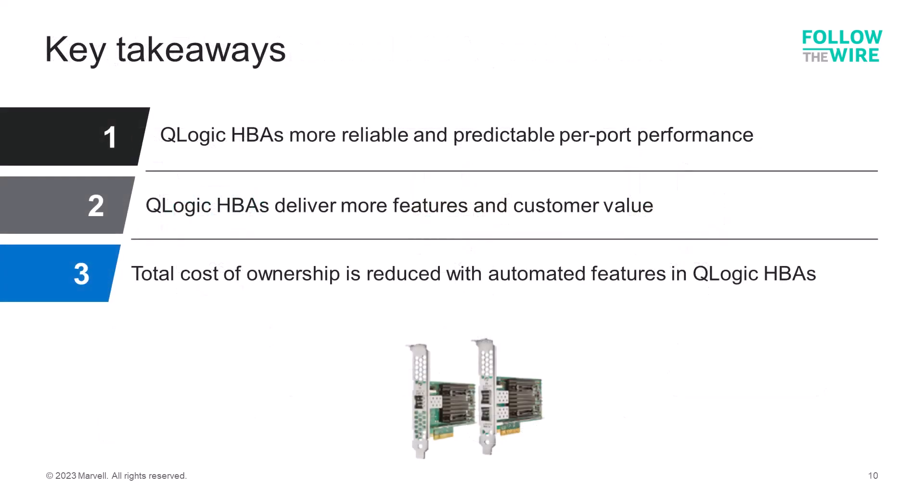Here are the key takeaways. QLogic HBAs with port isolation provide more reliable and predictable per-port performance than other offerings on the market. QLogic HBAs are feature-rich and work with all Fiber Channel vendors to ensure features are enabled, providing more customer value. And by implementing automation for congestion and VM workload monitoring and management, QLogic HBAs reduce the administrative burden and the overall total cost of ownership for customers.